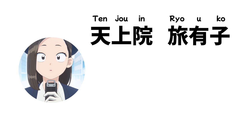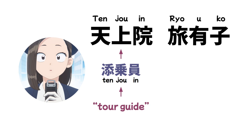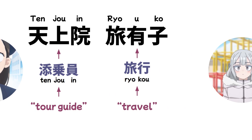One of my favorite one-off characters is Tenjoin Ryoko, the tour guide on class 1-1's school field trip to Kyoto. She's passionate about being a travel tour guide but also a bundle of nerves. It may have been fated for her: her last name 'Tenjoin' literally means 'tour guide,' and her given name 'Ryoko' is a pun on the word 'Ryoko,' meaning 'travel.'